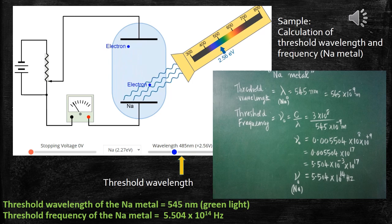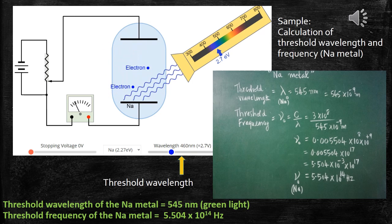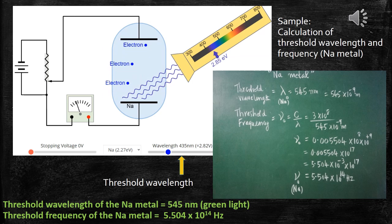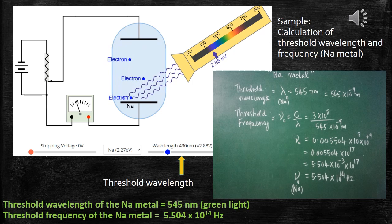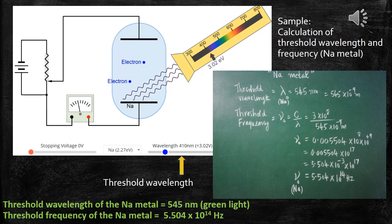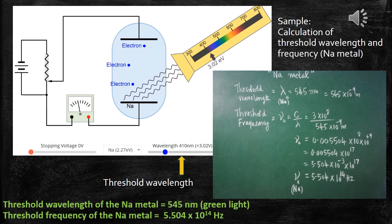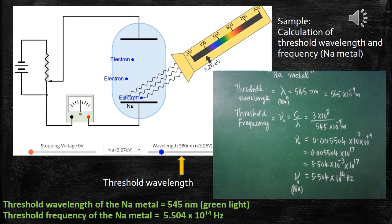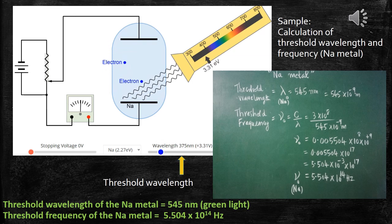Sodium is used as the negative cathode on which the radiation is made incident. 545 nanometers corresponds to green color light that is made incident on the metal. The first electron is made to eject out from the metal surface.